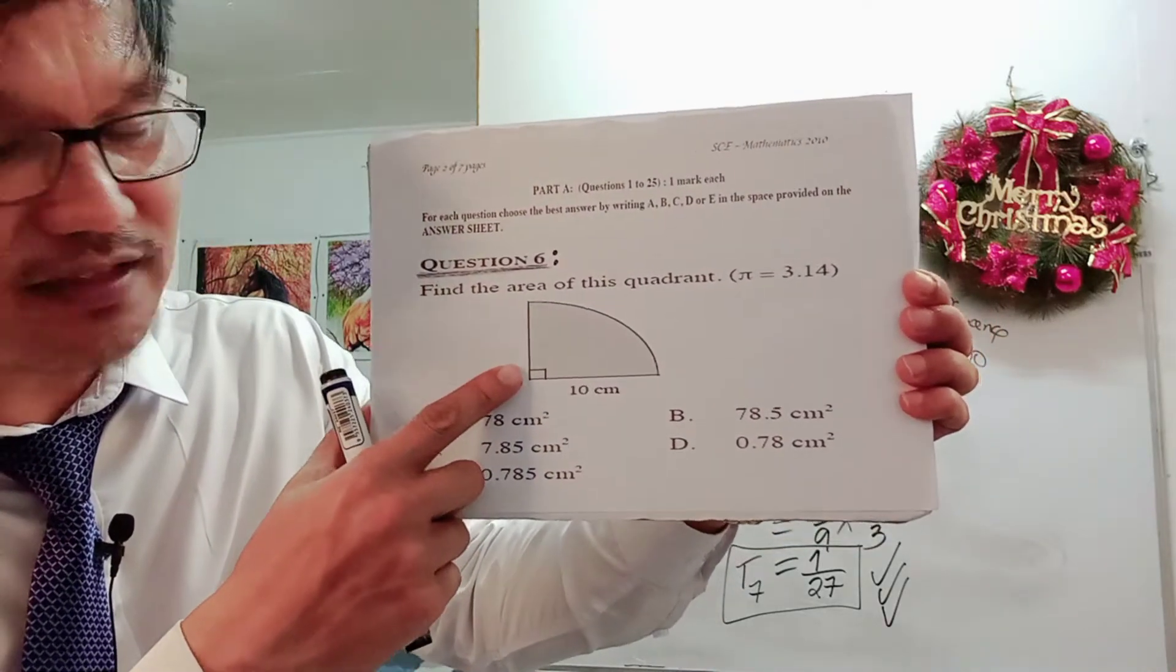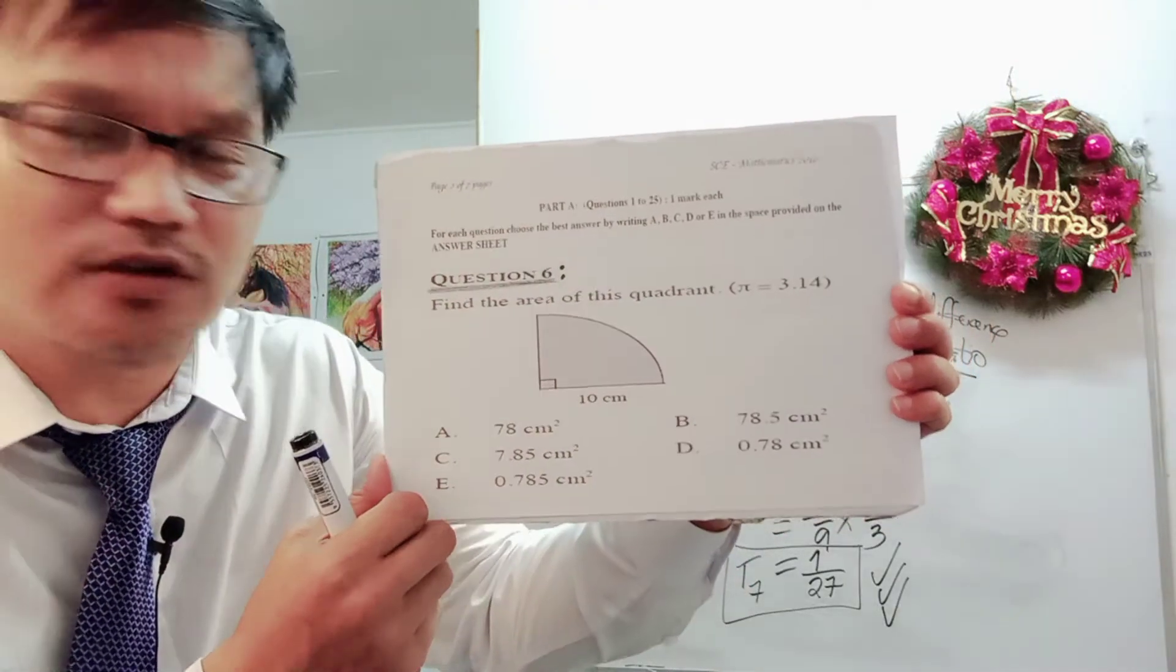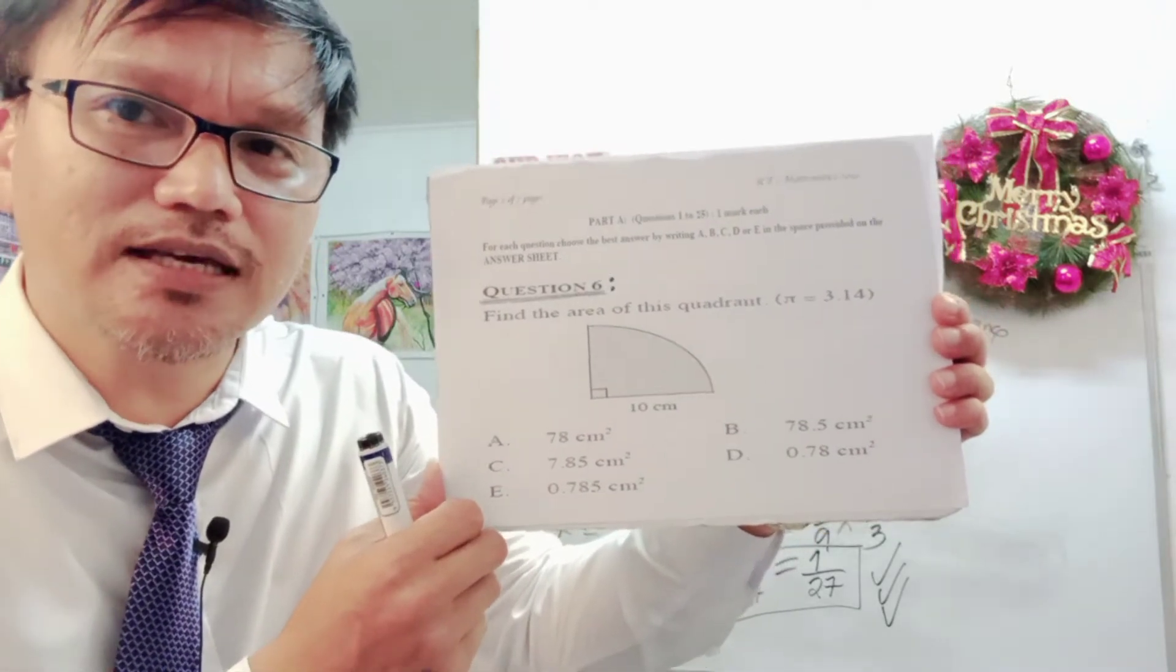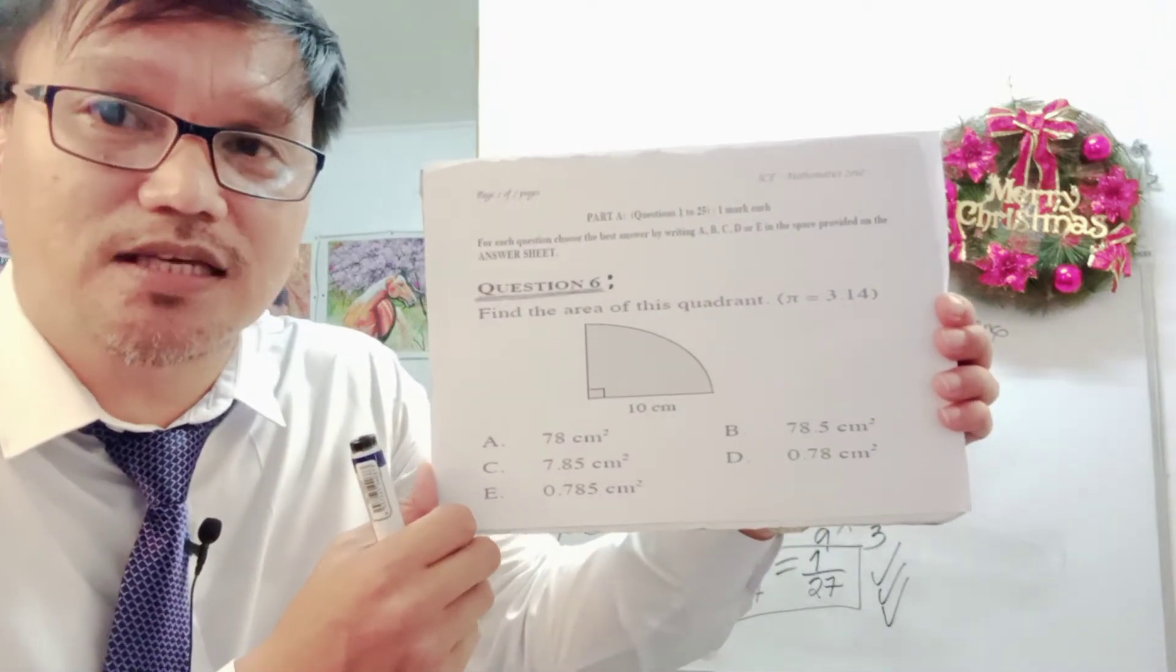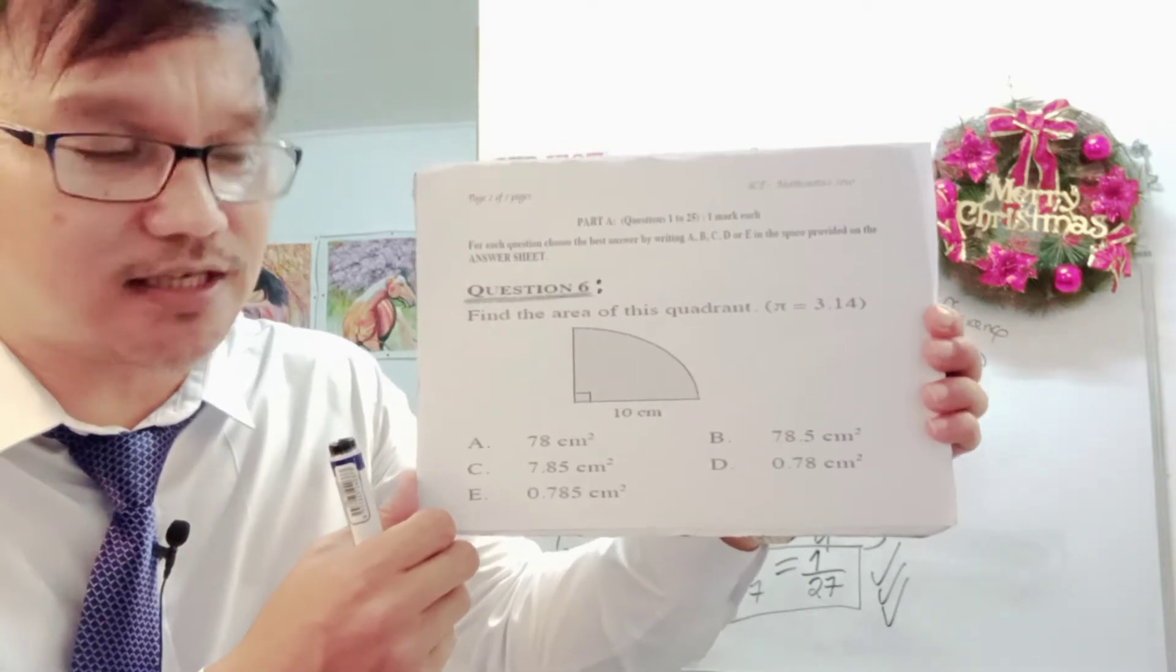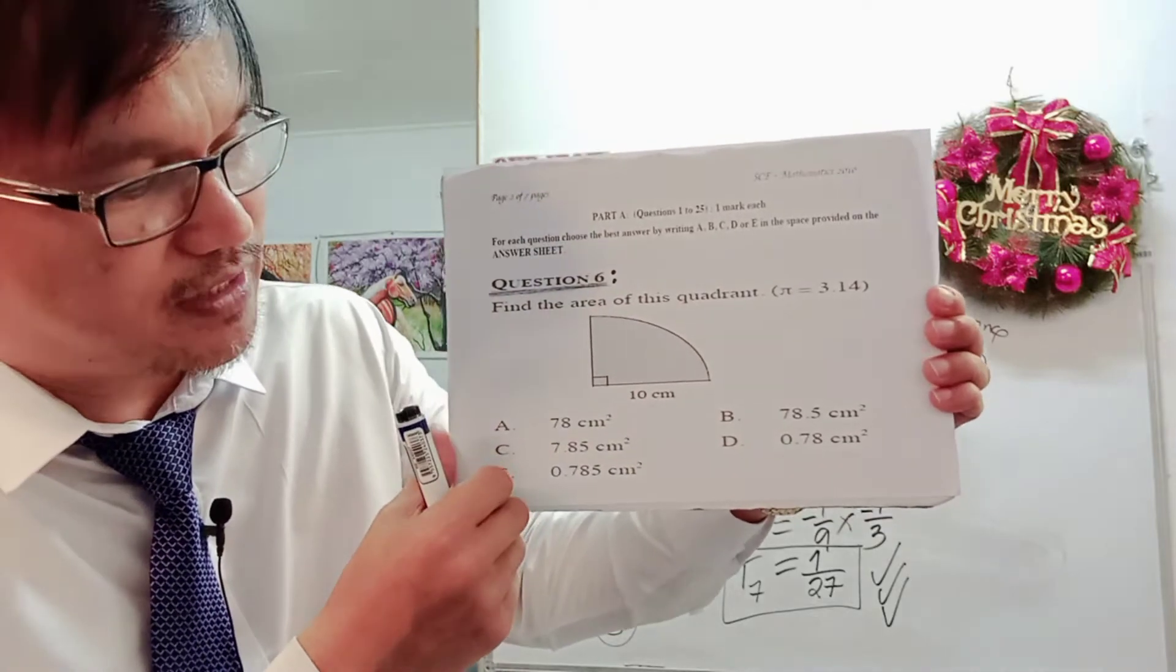If you look at that, check the diagram carefully. If you encounter a quadrant or a semicircle, you don't have to panic because everything is going back to the basic, which is the area of the circle. So this is the shaded area, and you are asked to find the area of this quadrant.